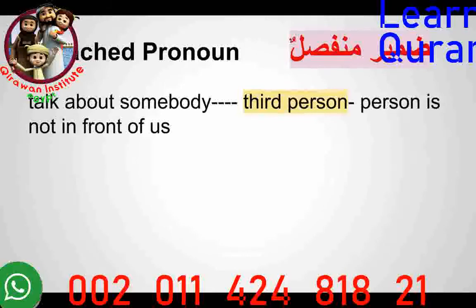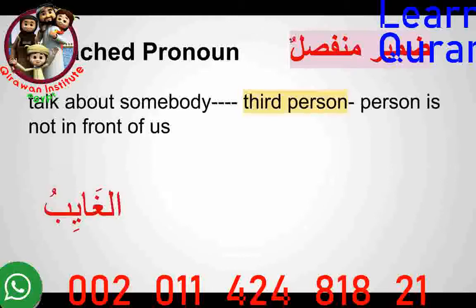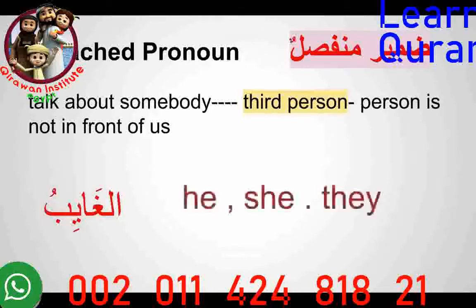So when do we use pronouns? We use pronouns when we are talking about the third person — when we are talking in front of somebody and using someone else's name. We use a third person pronoun, and that is called Al-Ghaib. This is when the person is not in front of you. In English we use 'he' and 'she' — for example, 'he is good,' 'she came yesterday,' 'they are going somewhere.' Al-Ghaib refers to the one who is absent.